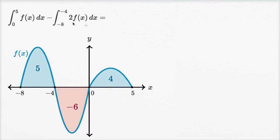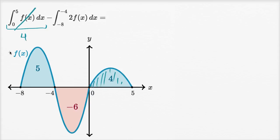Here, the first integral is the integral from zero to five of f of x dx. This is pretty straightforward — we're going from zero to five of f of x dx, so we're talking about that area which they tell us is four. Now we're going to subtract: going from negative eight to negative four of two f of x.